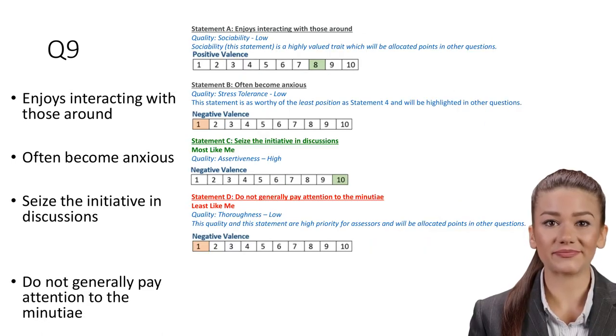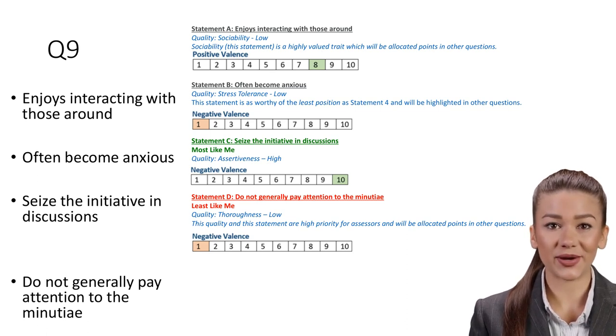Question 9. Statement A: Enjoys interacting with those around. Quality: Sociability, Low. It is possible to succeed in a job without high sociability but it creates challenges; socializing with colleagues helps boost the quality of workplace relationships. Robust relationship connections enable the team to coordinate better together. Sociability, this statement, is a highly valued trait which will be allocated points in other questions.